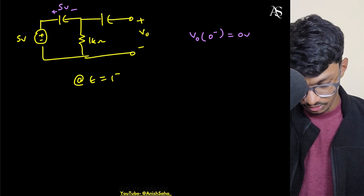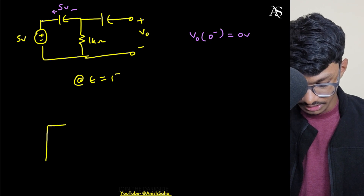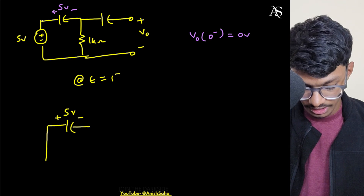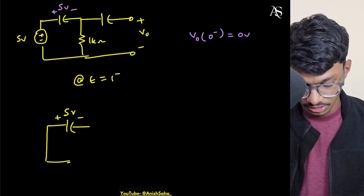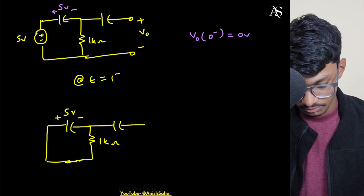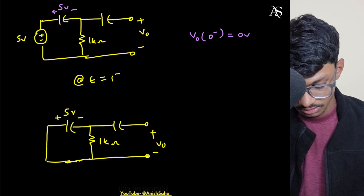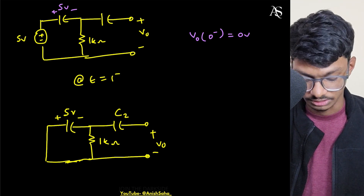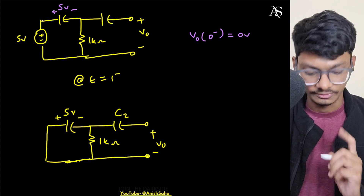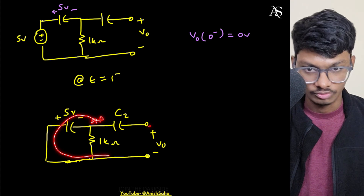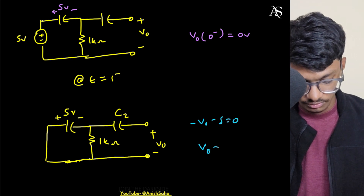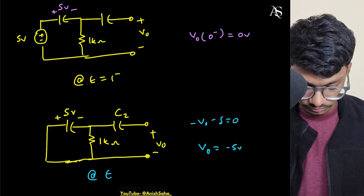At t equals 1+, the capacitor is still at 5 volts because it cannot change its voltage instantaneously — it needs time to reduce. So we have a 5-volt capacitor in series with a 1 kilo-ohm resistor, with the output taken across the resistor. The voltage across the resistor is the output voltage. Since the input has gone to zero, using KVL: minus Vo minus 5 equals zero, giving Vo equals minus 5 volts. That is the answer.